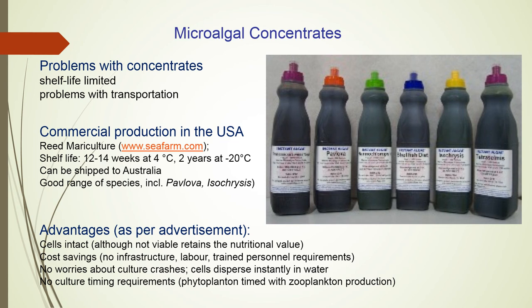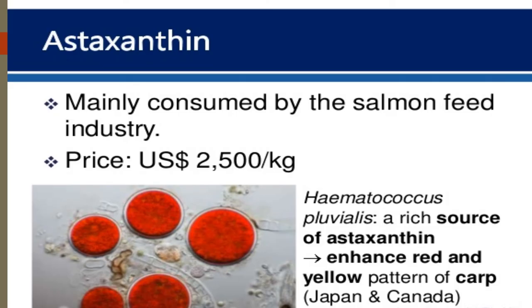Microalgal concentrates are used for the cultivation of Pavlova and Isochrysis. A problem with these concentrates is that shelf life is limited and transportation is a challenge. They are mainly used for reed mariculture. Shelf life is 12 to 14 weeks at 4°C and 2 years at minus 20°C, and they can be shipped to Australia with a good range of species like Pavlova and Isochrysis.